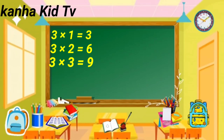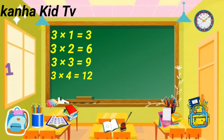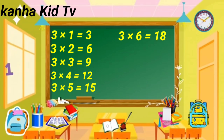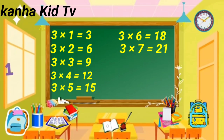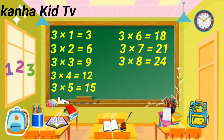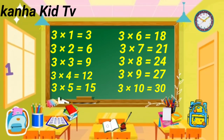Three threes are nine. Three fours are twelve. Three fives are fifteen. Three sixes are eighteen. Three sevens are twenty-one. Three eights are twenty-four. Three nines are twenty-seven. Three tens are thirty. Thanks for watching!